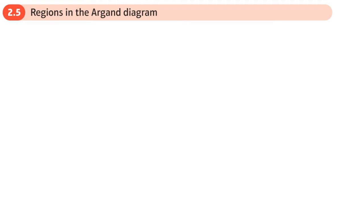This is the last section in the Argand diagrams chapter: regions in the Argand diagram. This is where instead of having an equal sign we have either greater than or less than. Let's try and make this as straightforward as possible, starting with the circles.